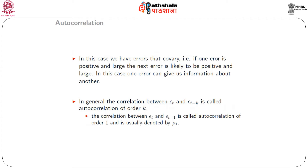In the case of autocorrelation, we have errors that co-vary. That is, if one error is positive and large, the next error is likely to be positive and large as well — one error can give us information about the other. In general, the correlation between epsilon_t and epsilon_{t-k} is called autocorrelation of order k. Similarly, the correlation between epsilon_t and epsilon_{t-1} is called autocorrelation of order 1 and is usually denoted by rho_1.